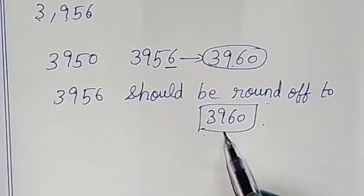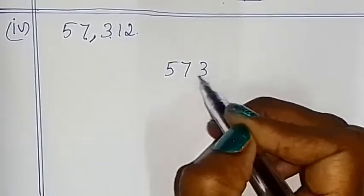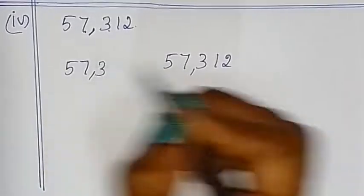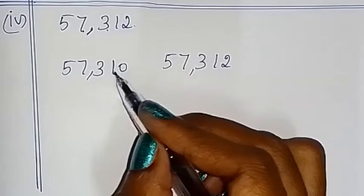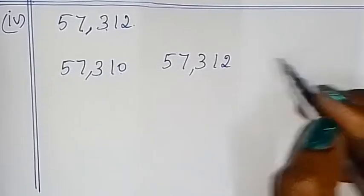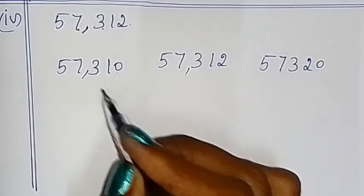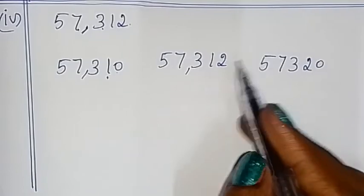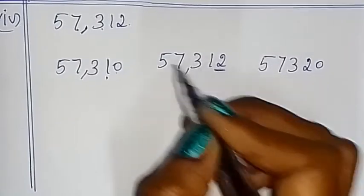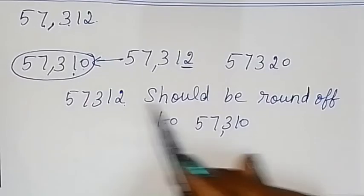Now for 57,312 — we need to check the ones digit. The nearest 10 before is 57,310 and after is 57,320. The ones digit 2 is less than 5, so 57,312 should be rounded off to 57,310 as the correct answer.